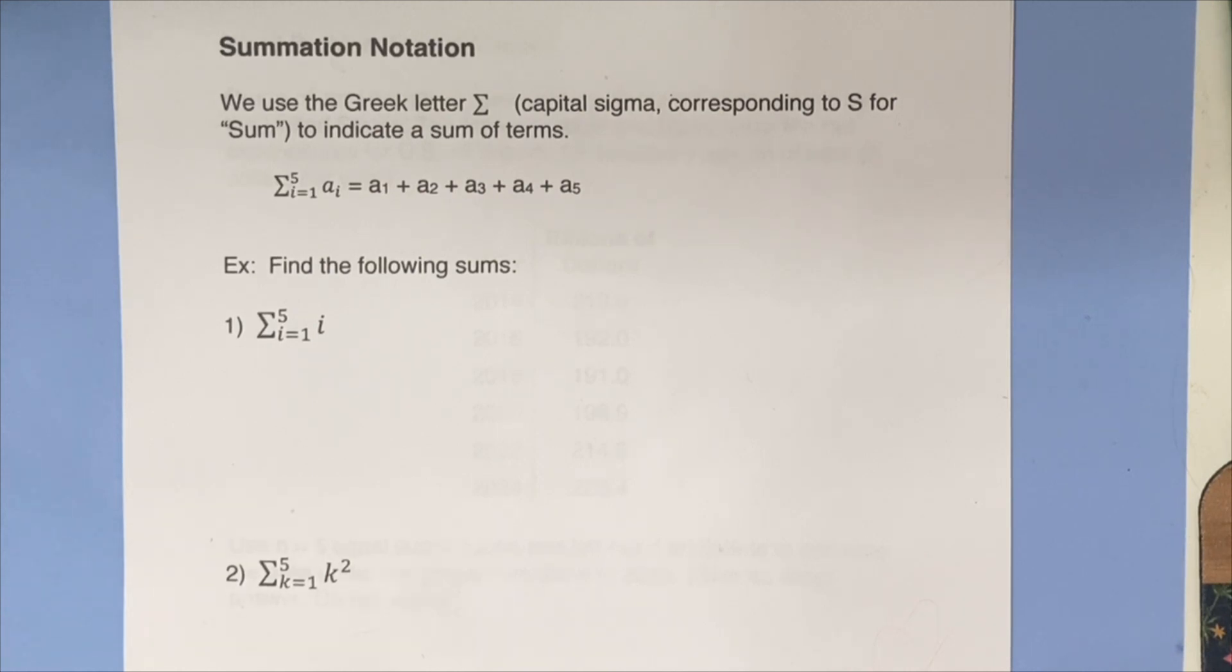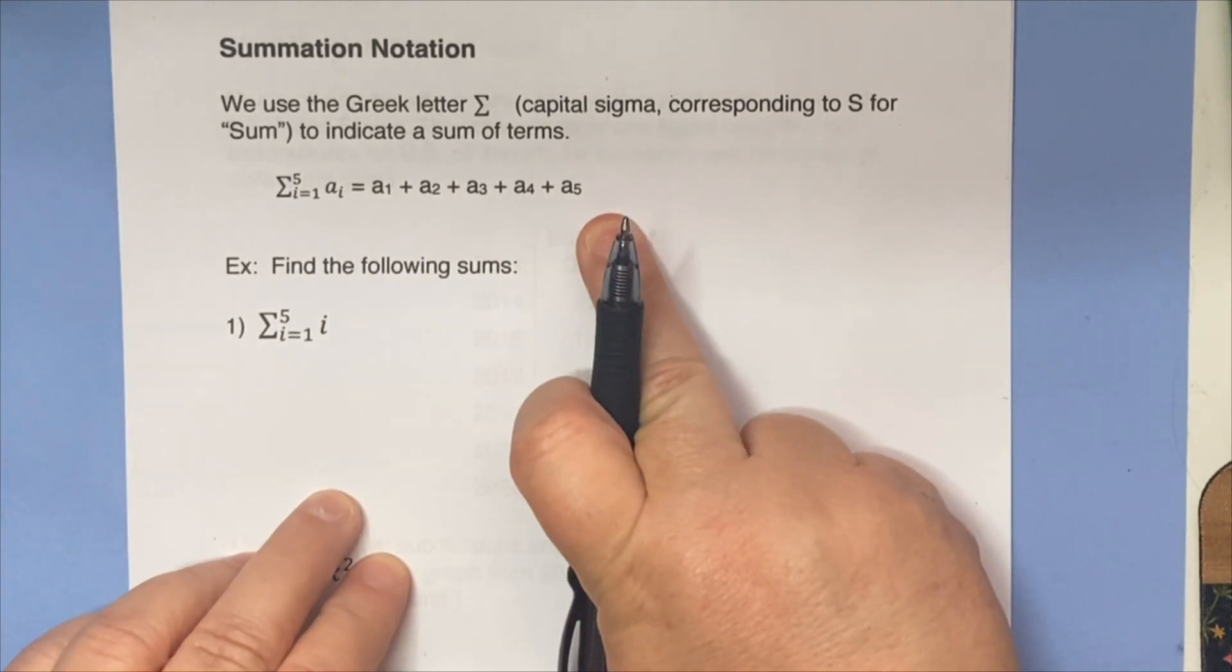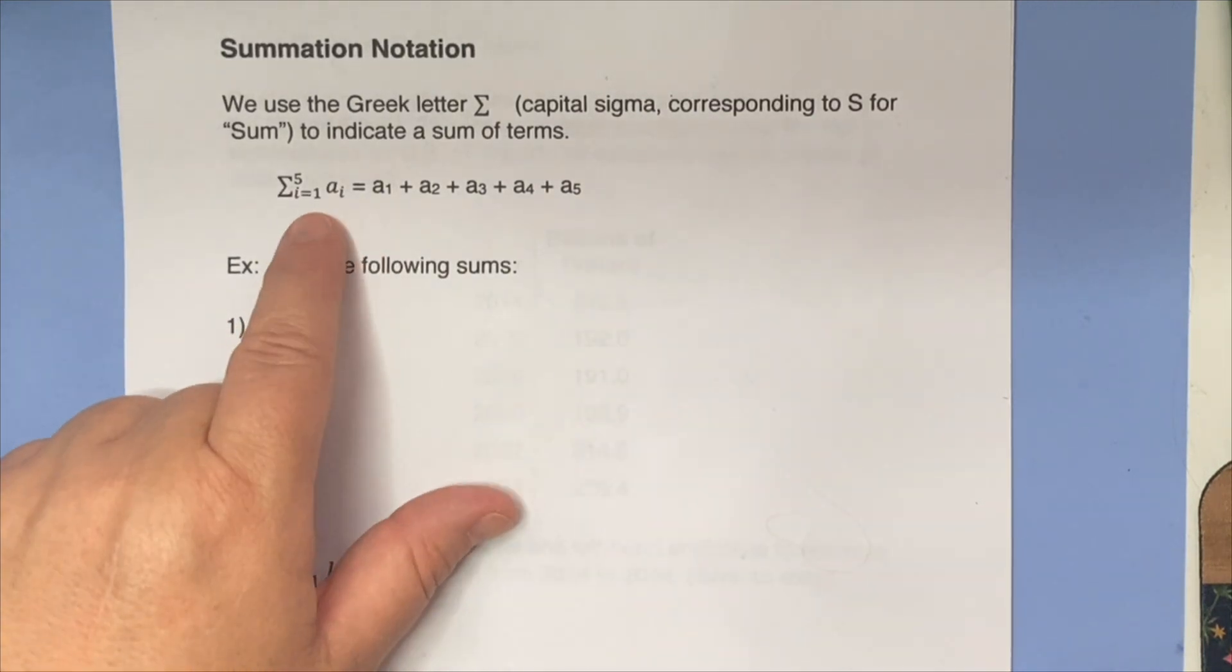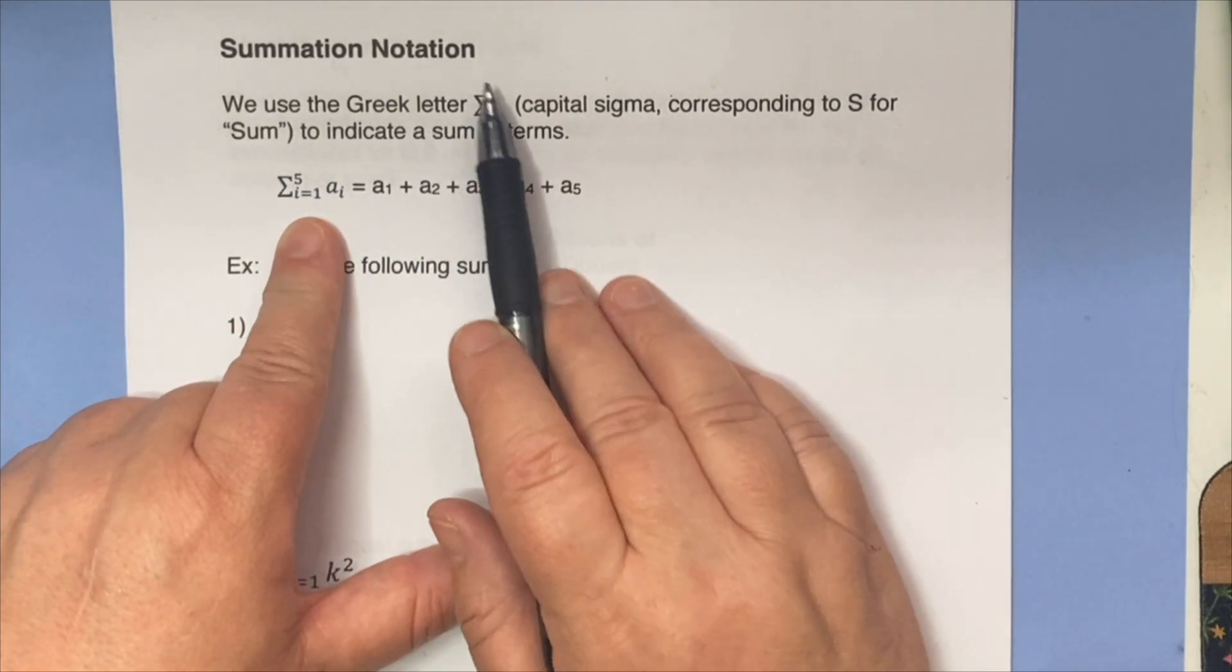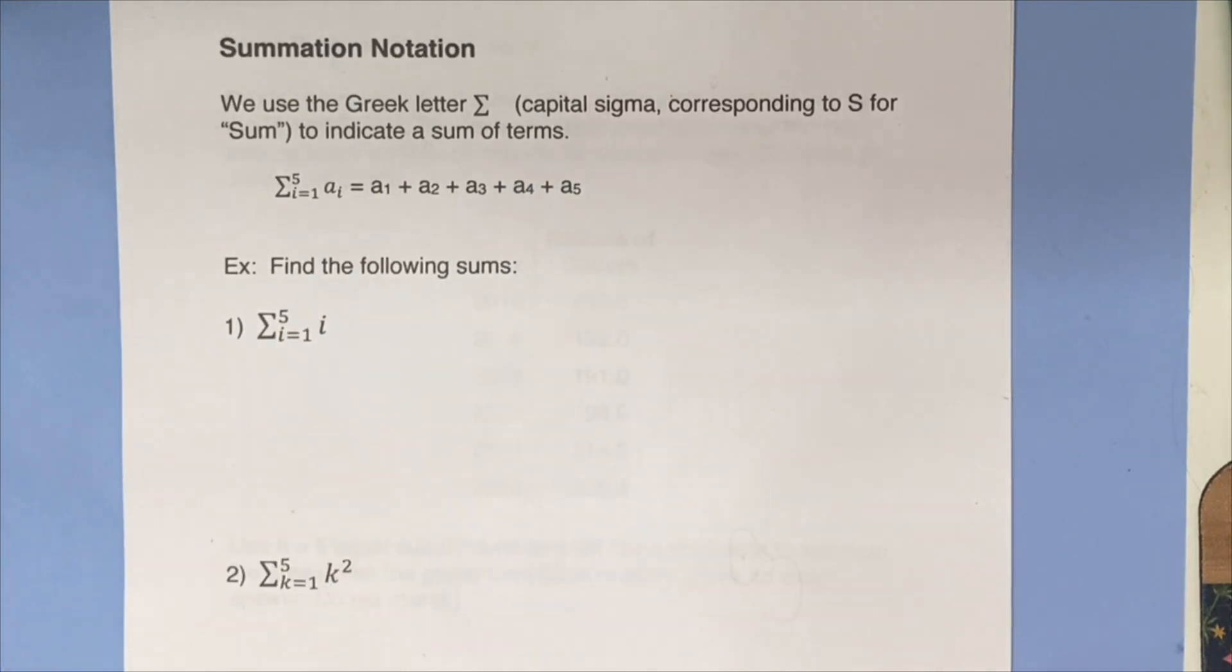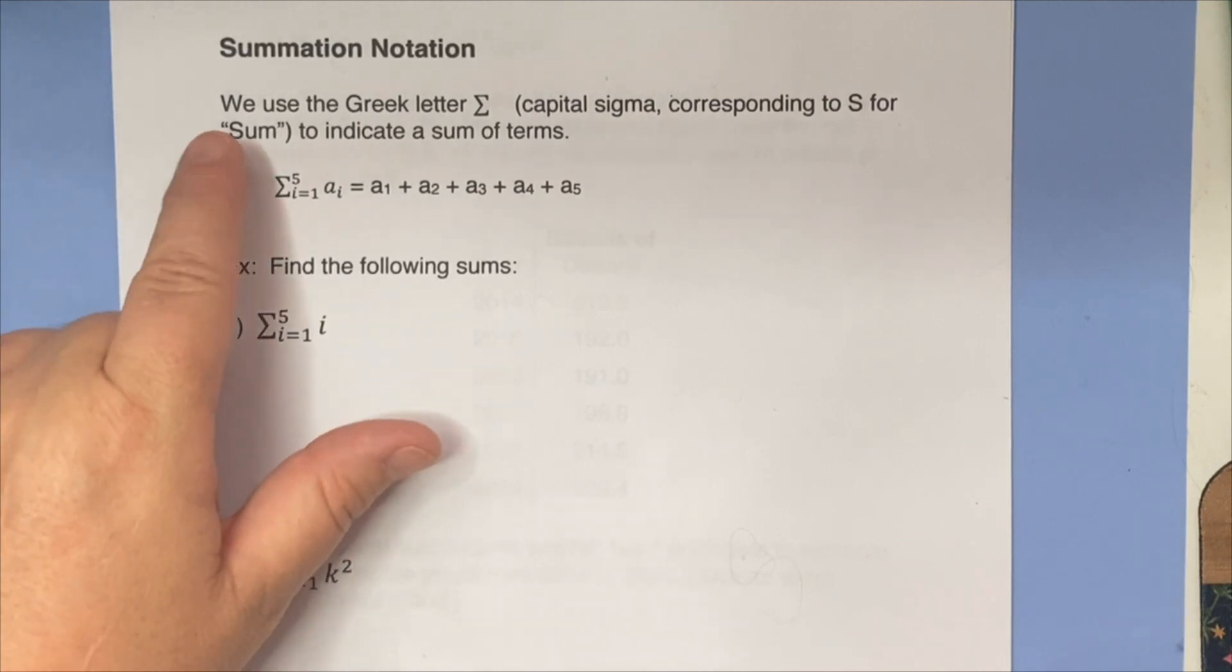In the previous video, we were adding a bunch of things together. And when we add a bunch of things together, it gets really tiresome to have to write them all out. So in mathematics, we have a special symbol that allows us to write them using a fairly compact notation. We're going to use the Greek letter Sigma, which corresponds to our letter S and that stands for SUM.